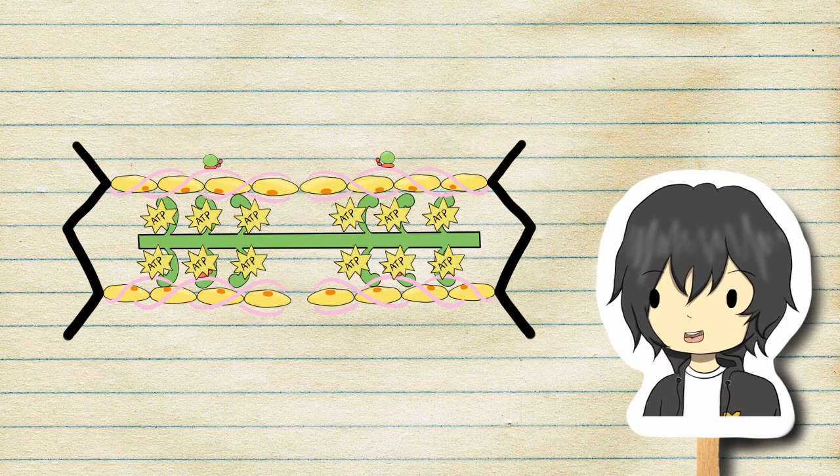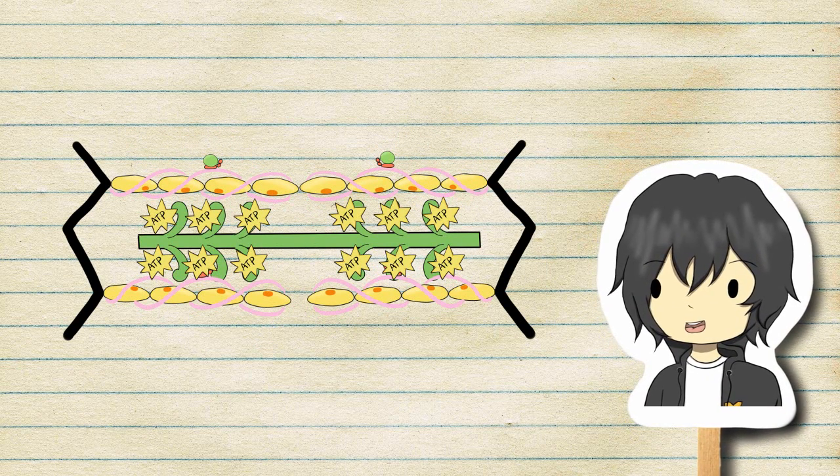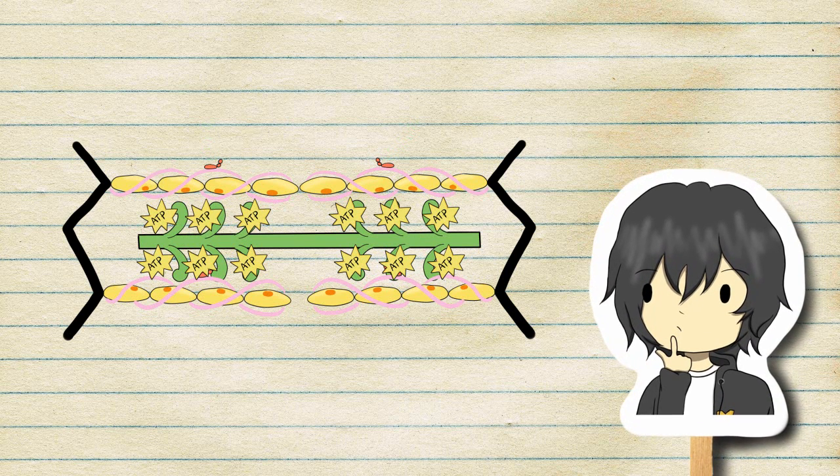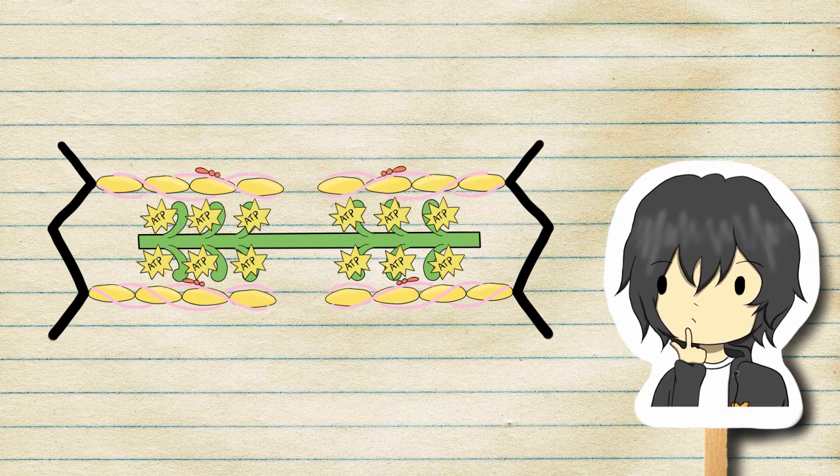This is because ATP causes links between actin and myosin to break. ATP, however, doesn't break down. The calcium or troponin complex is taken apart. Troponin and tropomyosin interact and block the binding site on actin. The muscle fiber relaxes.